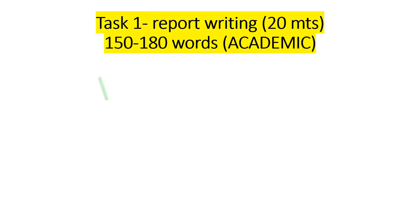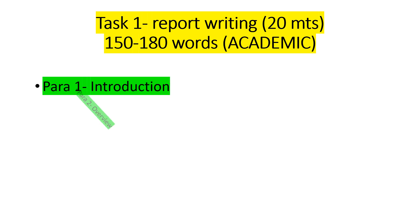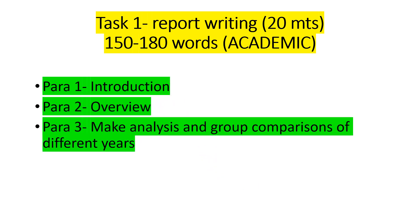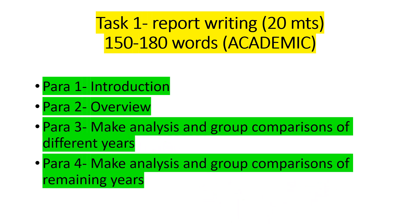Now let's take a look at task 1 report writing — 20 minutes, 150 to 180 words. All in all, we are going to make four different paragraphs. The first is an introduction. The second will be an overview — it's like a summary. Paragraph 3 is where we make analysis and group comparisons of different years. And the last, paragraph 4, is making analysis and group comparisons of the remaining years.